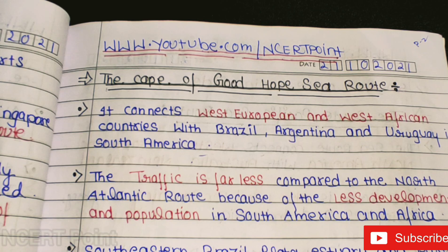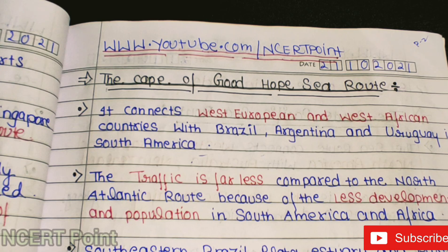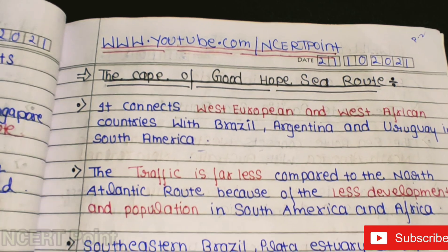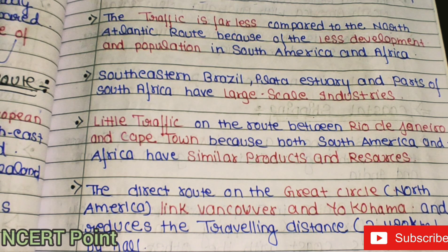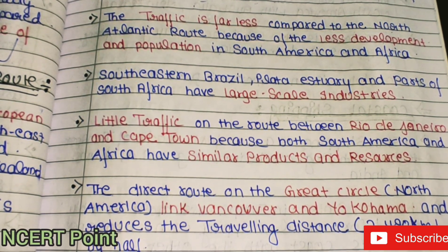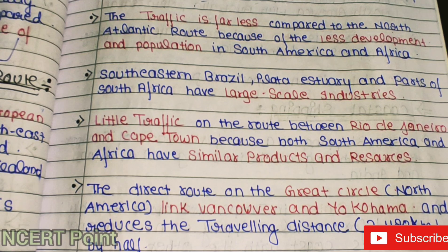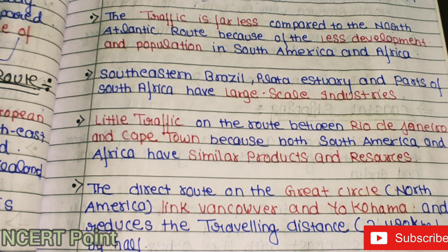The Cape of Good Hope route connects Western Europe and West Africa, and also connects with Brazil and Argentina in South America. The traffic is far less compared to the North Atlantic routes because of less development and population in South America and Africa. South-eastern Brazil, the Plata estuary, and parts of South Africa have large-scale industries. There is little traffic on the route between Rio de Janeiro and Cape Town because both South America and Africa have similar products and resources.